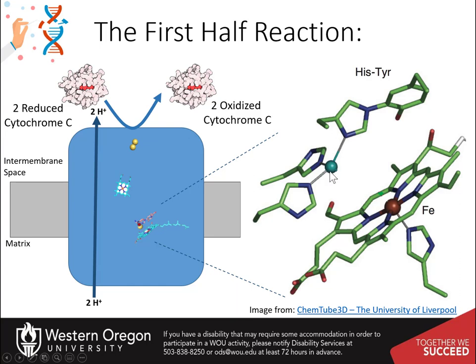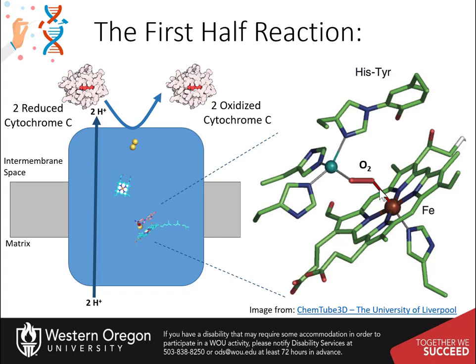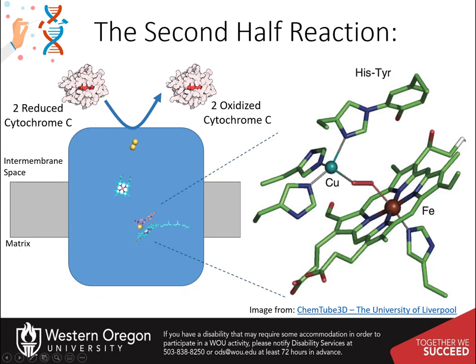The copper B and heme A3 cofactors make up the active site of the enzyme. When in the reduced state, the copper and iron from these cofactors can coordinate with molecular oxygen to form a peroxide intermediate. One electron from the pi bond between the oxygen residues will coordinate with the electron housed on the copper B cofactor, and the other electron from the pi bond will coordinate with the electron housed on the iron within the heme A3 cofactor.